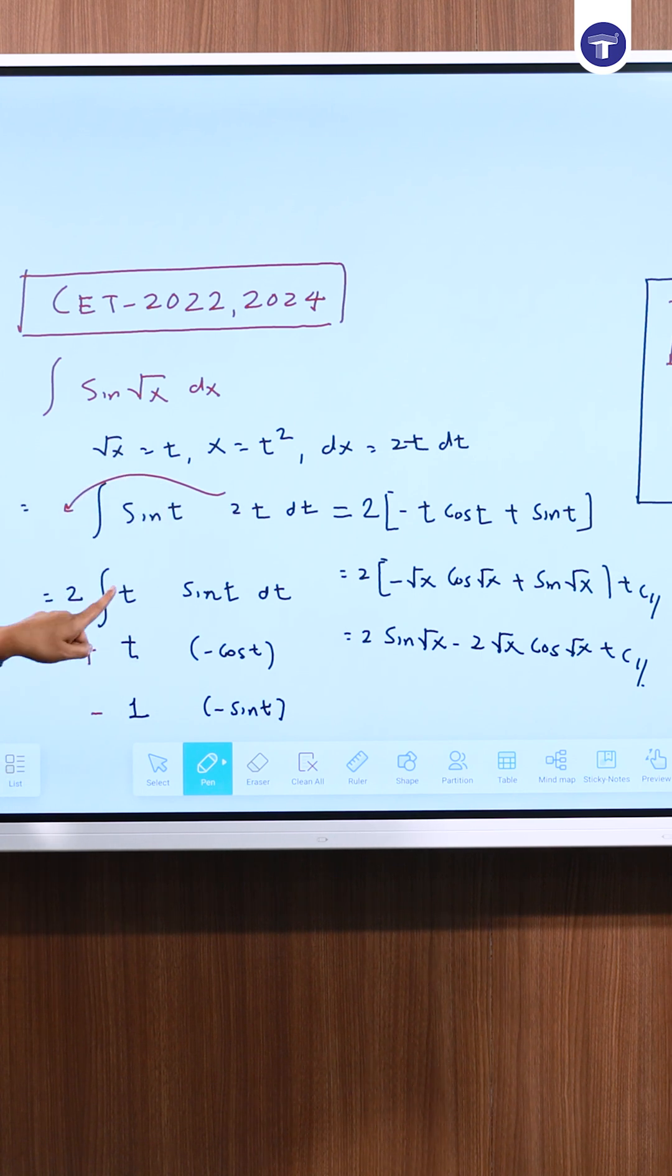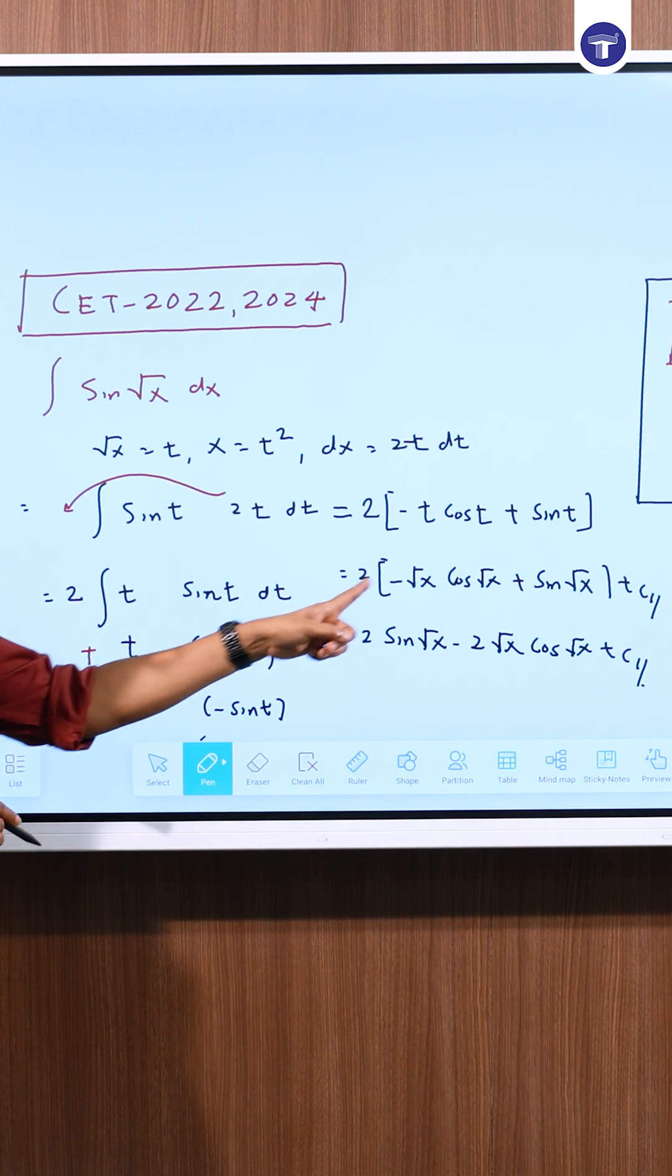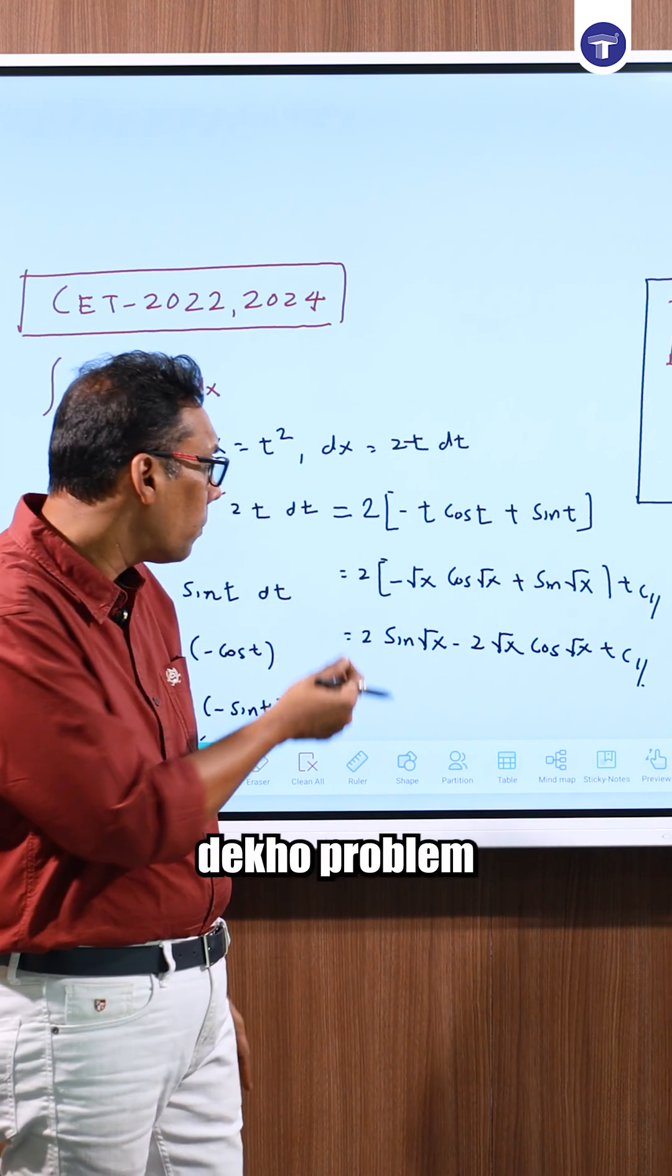Derivative of t is 1. Integral of sin is -cos, integral of cos is sin. Plus into minus is minus. This gives -t cos t plus sin t, and the problem is solved.